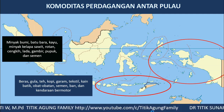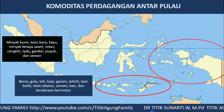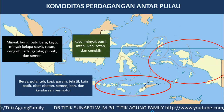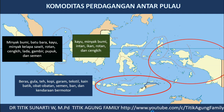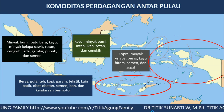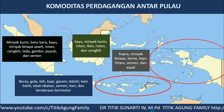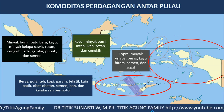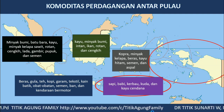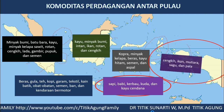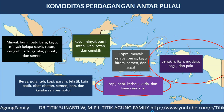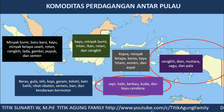Dari Pulau Jawa dan Madura juga terdapat ban dan kendaraan bermotor. Dari Pulau Kalimantan: kayu, minyak bumi, intan, ikan, rotan, dan cengkih. Dari Pulau Sulawesi: koprah, minyak kelapa, beras, kayu hitam, semen, dan aspal. Dari Bali dan Nusa Tenggara: sapi, babi, kerbau, kuda, dan kayu cendana. Dan yang terakhir dari Kepulauan Maluku dan Papua berupa cengkih, ikan, mutiara, dan pala.